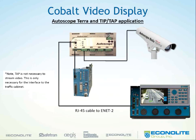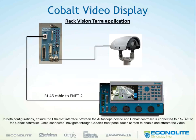Another application is the COBOLT video display. Here you'll see an Autoscope Soloterra connected through its normal components, through an RJ45 to ENET2, to observe not just video at the intersection, but also the Autoscope zones and activity as cars come across the detection zone. A similar situation is shown using the RackVision Terra. In both configurations, the Ethernet interface between the Autoscope device and the COBOLT controller is connected through ENET2. With newer software, you can also connect through ENET1 to observe operation at adjacent intersections.